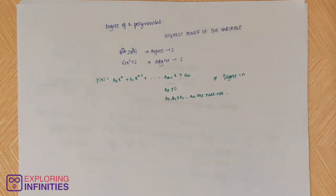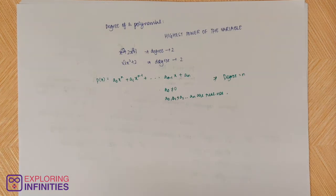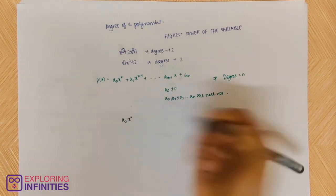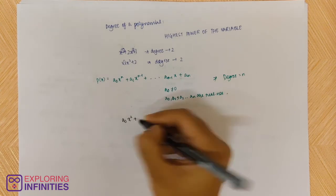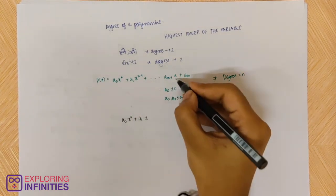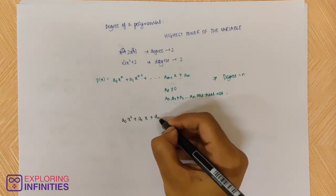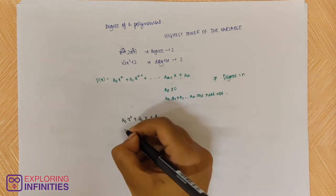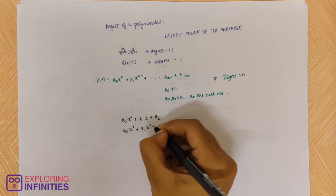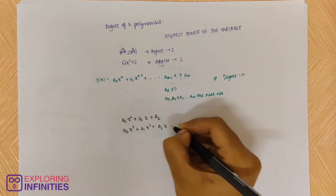Don't be scared looking at the expression — it's very simple once you understand it. If n is 2, then we have a₀x² + a₁x + a₂. If n is 3, we can write it as a₀x³ + a₁x² + a₂x + a₃. Simply put, the letters keep increasing: a₀, a₁, a₂, and so on.